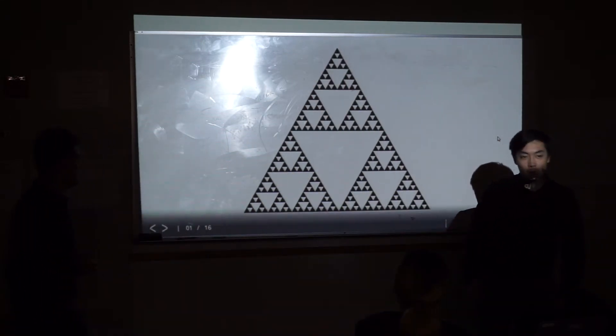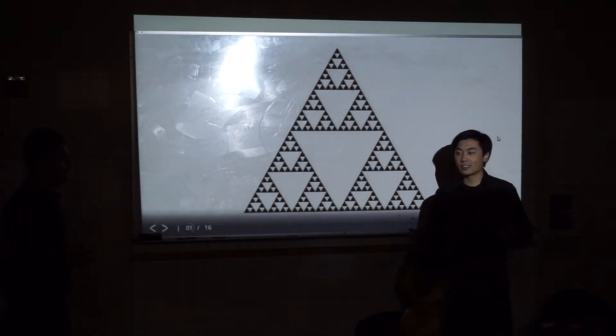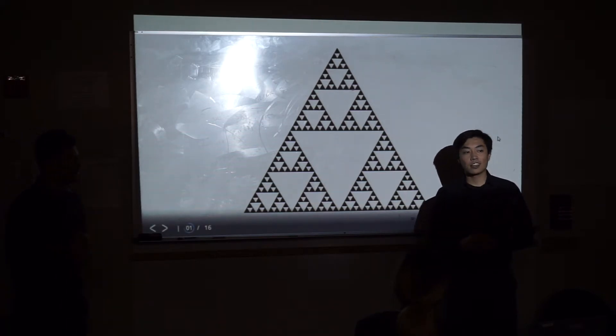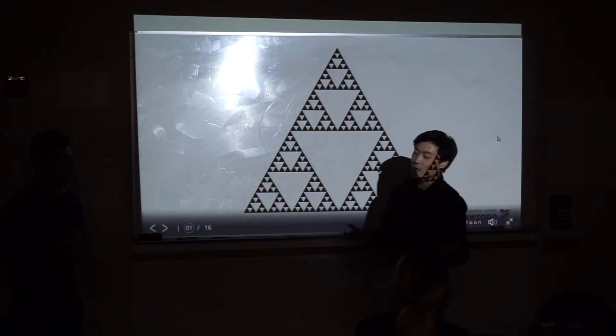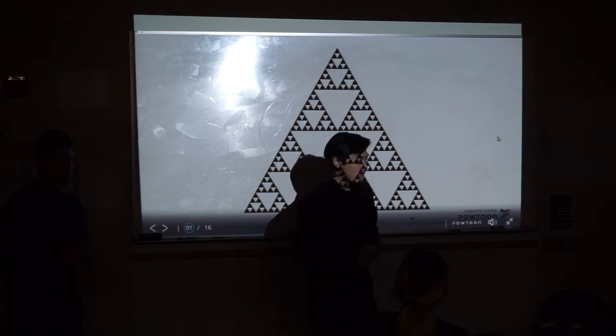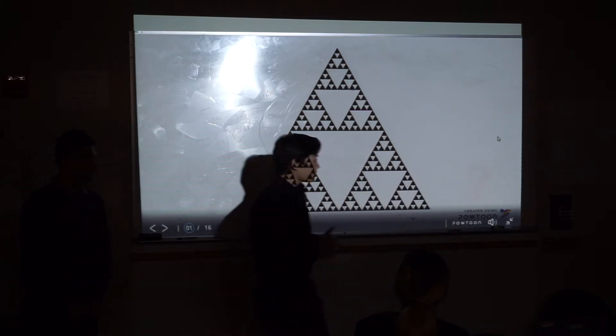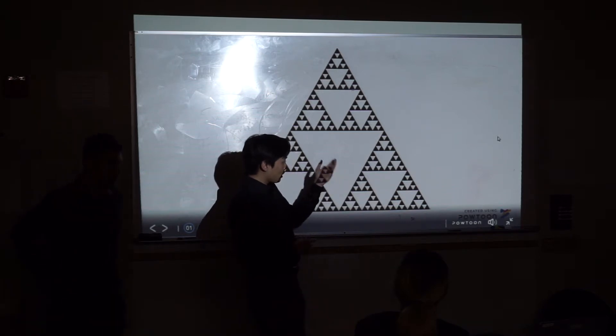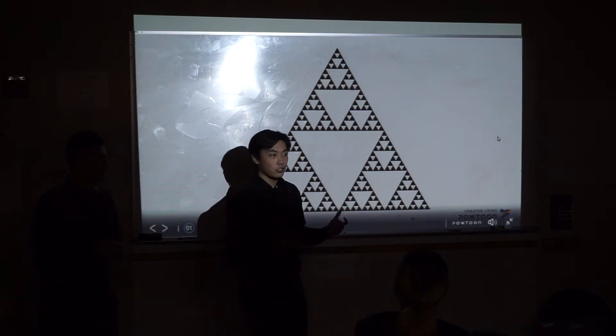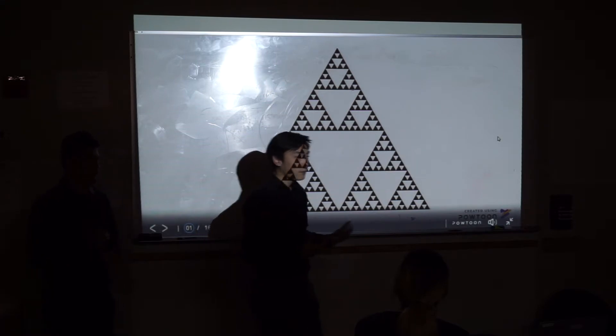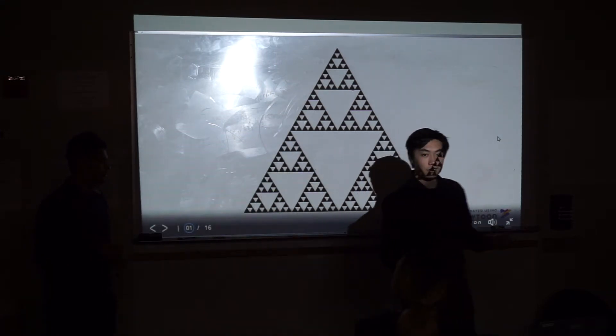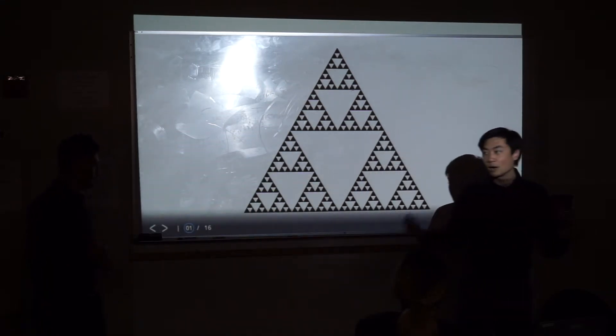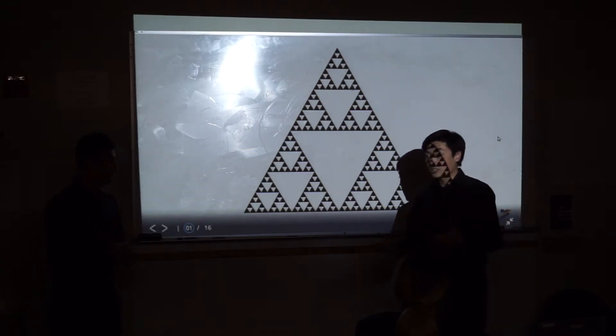So fractal geometry basically mixes art and mathematics to prove that equations are more than just numbers. Fractals are important because they're used to describe mathematical things such as natural forms like coastlines, mountain ranges, and even parts of the living body.